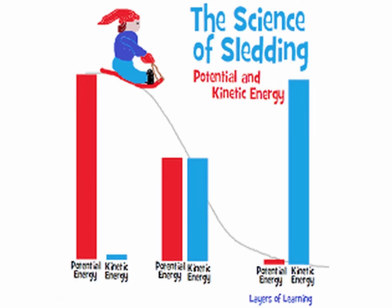If we look at the boy on the sled at the top of the hill, he has a ton of potential energy but very little kinetic energy. He's at the very top — a lot of stored energy, not using it just yet. As he goes down the hill, he's decreasing the amount of potential energy and increasing the kinetic energy. At the bottom of the hill, he has very little potential energy left and the rest is kinetic energy. His position has changed, so kinetic energy increases.